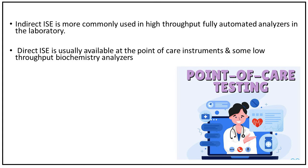The indirect ion-selective electrode method is more commonly used in high-throughput, fully automated analyzers in the laboratory. The direct ion-selective electrode method is usually available at point-of-care instruments and some low-throughput biochemistry analyzers.